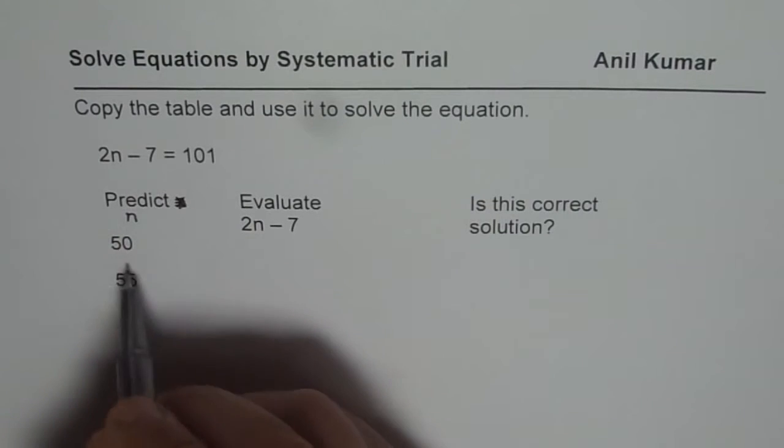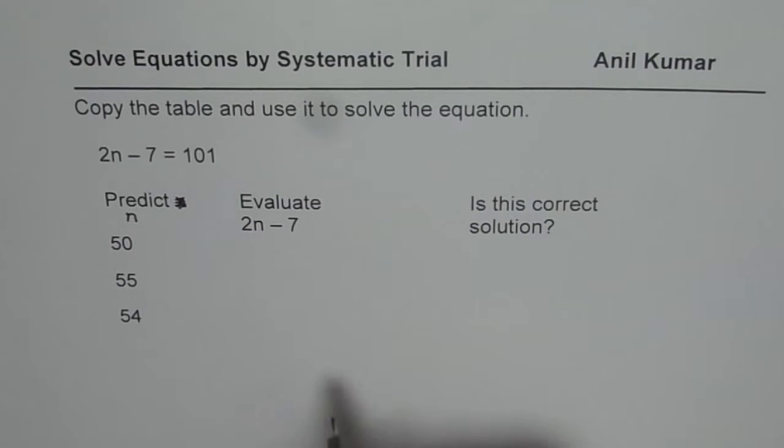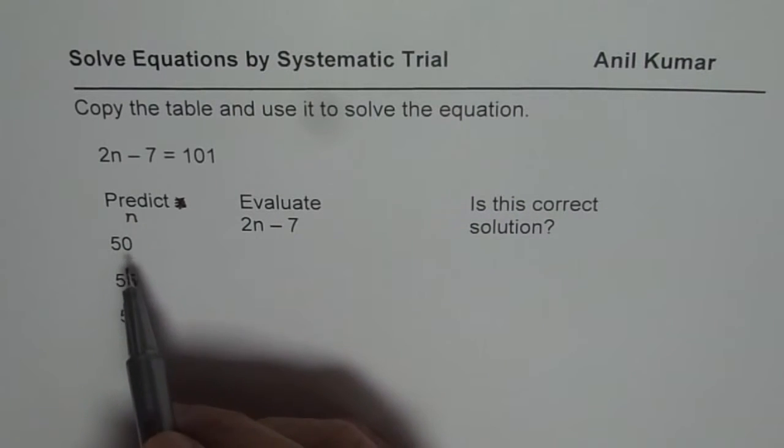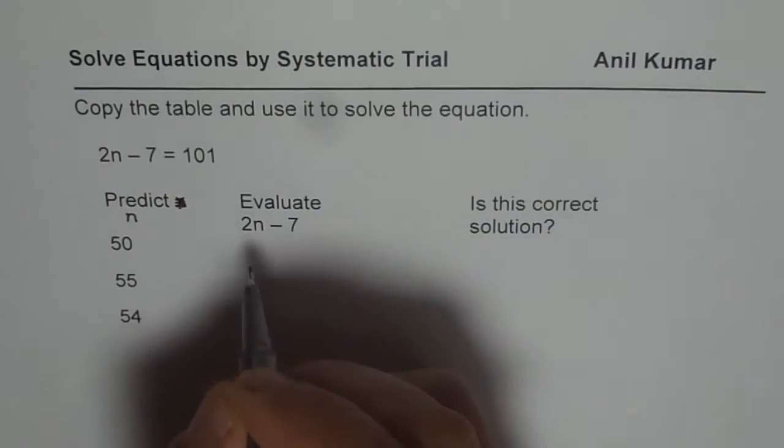So let us begin with the round number of 50. In this particular case, make a table as shown here. We'll predict with some numbers that we could get the right result. So the first case is we are taking 50 as a number.